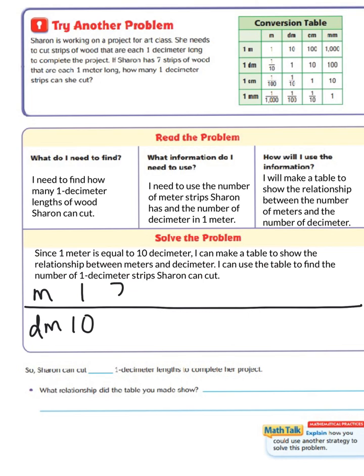Two meters is going to be 20 decimeters. Three meters, 30 decimeters. Four meters, 40 decimeters. And if we jump all the way up, continuing the pattern, with seven meters multiplied by 10, we know that there will be 70 decimeters.